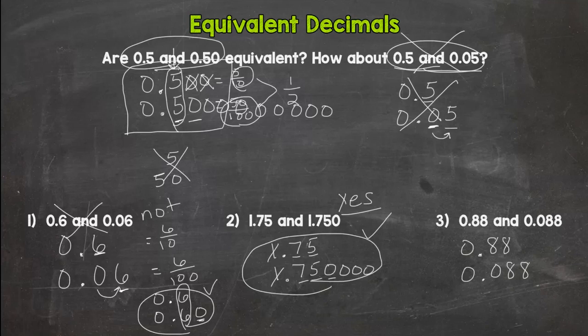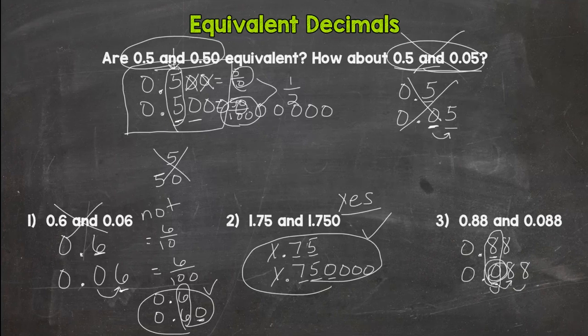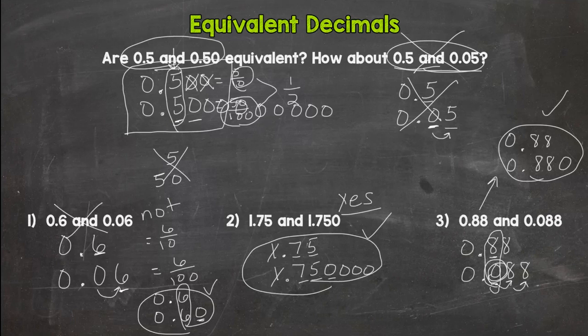Let's try number three: eighty-eight hundredths and eighty-eight thousandths. Looking at the tenths place, this one has an eight and this one has a zero — so these are not equivalent. This zero pushed the 88 to different places, so it changes the value. If we had 88 hundredths and 880 thousandths, those would be equivalent, because all we did there was put a zero to the right of the 88, which does not move any of the numbers to different places and does not change the value.